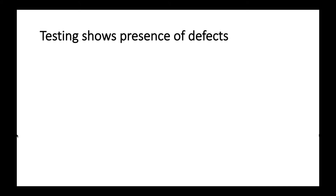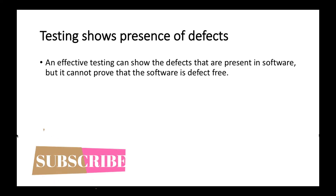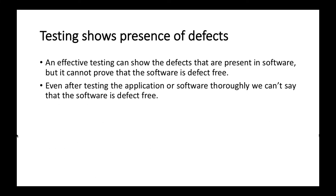The first principle is testing shows presence of defects. An effective testing can show the defects that are present in software, but it cannot prove that the software is defect free. If you say that testing is complete, it doesn't mean that there are no defects in the software — it means that the number of defects present earlier are now reduced.